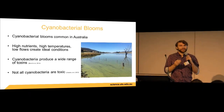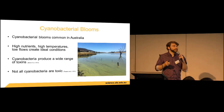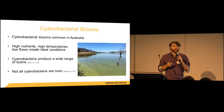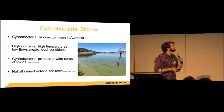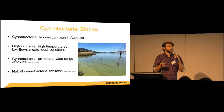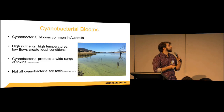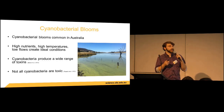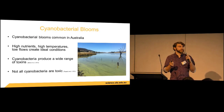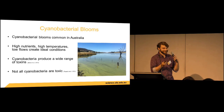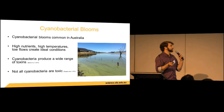Cyanobacteria blooms are found throughout Australia's different aquatic ecosystems including lakes, reservoirs, and rivers. Certain conditions promote cyanobacterial growth including high nutrient input, high temperatures, and low flows. Human activity has caused blooms to increase in frequency, from activities such as climate change increasing temperatures and agricultural runoff resulting in eutrophication.